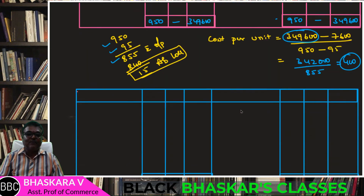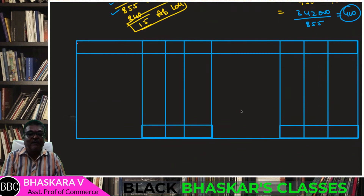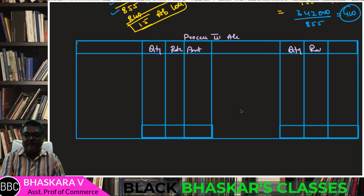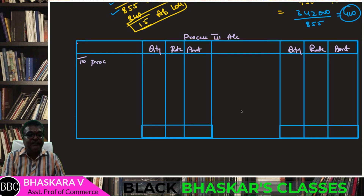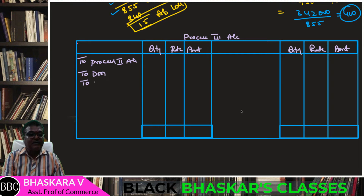Process 3 Account: columns are quantity, rate, amount. Input from Process 2 account; to direct material, direct wages, direct labor, production overhead. By normal loss.